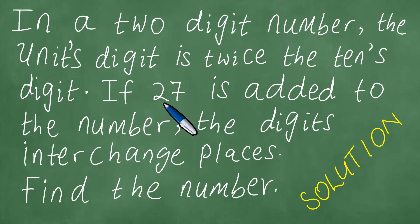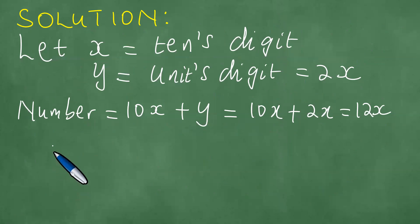Moreover, if 27 is added to the number, the digits interchange places. We add 27 to the number. Hence, we have this number, which is 12x or 10x plus 2x, and you add 27 to that number.